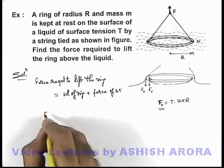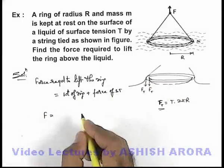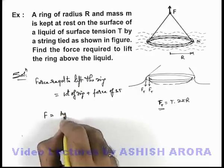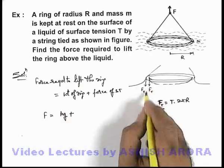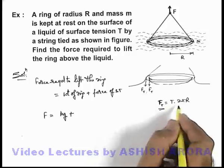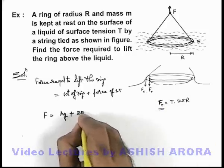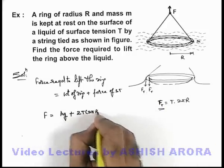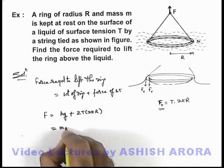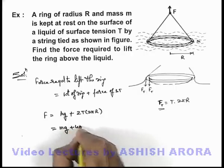So this force required to lift the ring in the upward direction can be written as its weight mg plus the total force in the downward direction which surface tension is exerting is twice of T multiplied by 2πR. So this can be written as mg plus 4πRT.